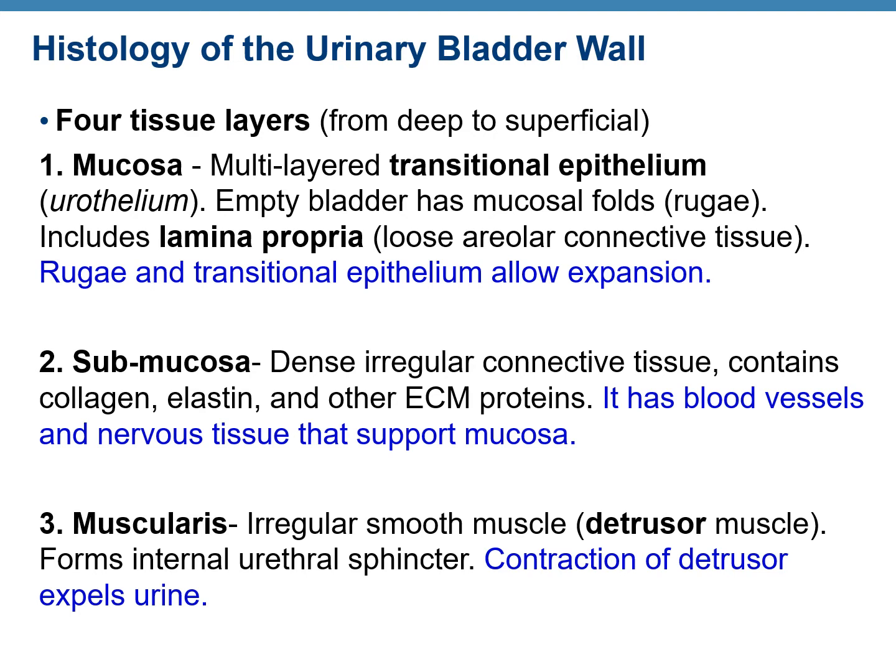When the bladder is empty, you can see mucosal folds known as rugae. When the bladder expands, the rugae flatten out, helping the expansion. The mucosa also includes a thin layer of loose areolar connective tissue known as the lamina propria. The function of the mucosa is to allow expansion, achieved by the rugae and the transitional epithelium together.